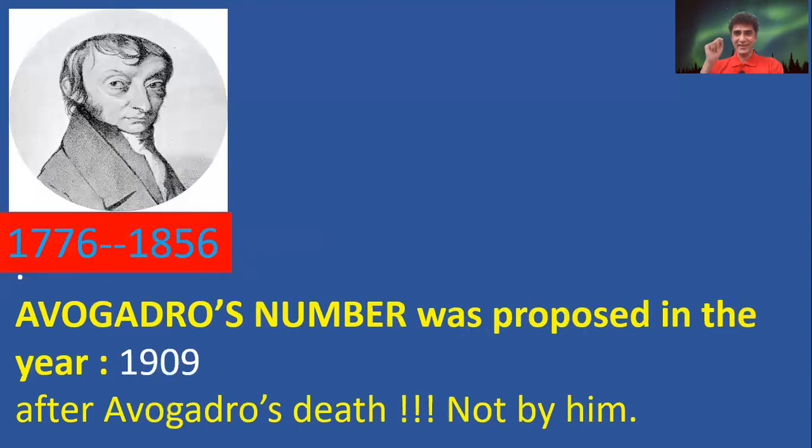Avogadro's number was proposed in the year 1909. Interestingly, Avogadro lived between the years 1776 and 1856. It means Avogadro's number was proposed after the death of the scientist Avogadro. Somebody else proposed it after his death.